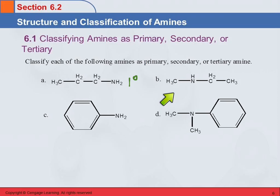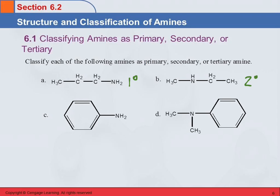How about example B? There's the nitrogen — primary, secondary, or tertiary? Secondary. How about the next one? You can also think of how many carbons are attached to the nitrogen. Only one, so that's primary.